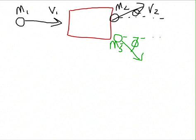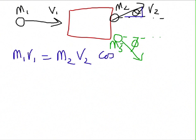Momentum horizontally. m1 v1 equals m2 v2, this is adjacent over hypotenuse cos theta plus m3 v3 cos phi.